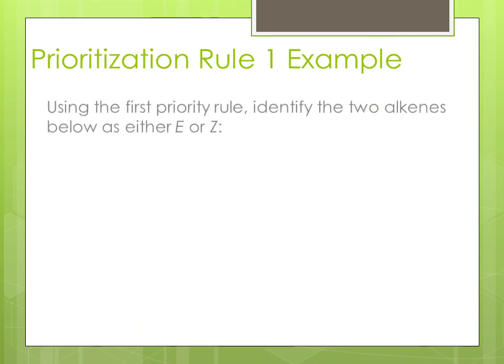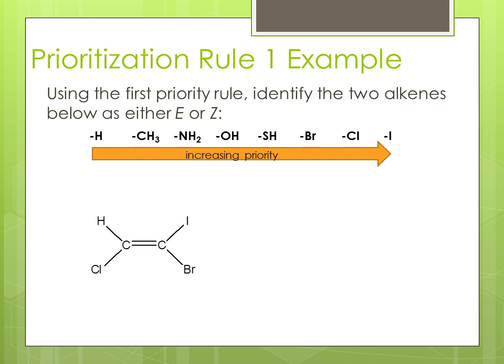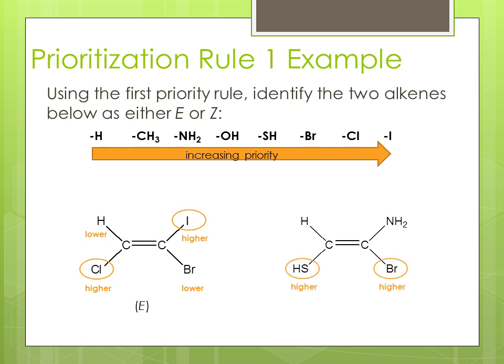Here is an example. Remember to use these rules for prioritizing. Notice that the two highest priority substituents are on opposite sides of the double bond. Because these two substituents are higher than the other two and are on opposite sides of the double bond, this molecule will be designated as an E configuration. Similarly, look at this organic molecule. Its two highest substituents are on the same side, so this organic molecule will be designated as a Z configuration.